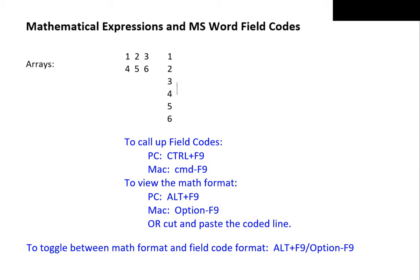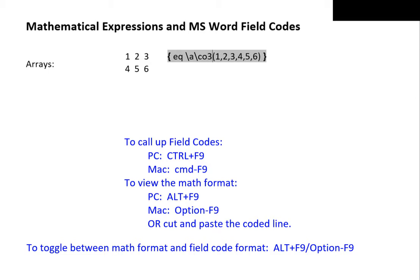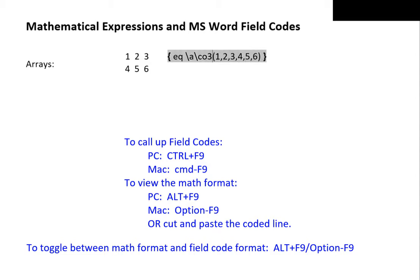If the array has to have three columns, we need to specify this. To see how, we toggle to the field code mode. Type backslash after A, then CO for column, and then the column number — in this case, let's set the number of columns to 3. Toggle out of field code mode, and we have our 2 by 3 array. Word automatically determines where a row starts and ends based on the number of columns specified. To further demonstrate, let's change the number of columns to 2. Toggle out, and we have our 3 by 2 array.